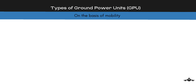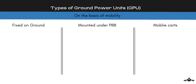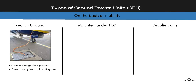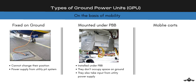Ground power units are categorized based on their mobility. They can be either fixed on ground, mounted under the boarding bridge, or mobile on carts. GPUs fixed on ground are installed on an aircraft stand and cannot change their position. Their cable has enough length to be pulled and attached to the aircraft. They take power supply from the utility power — that is, from the airport building — which we will discuss in upcoming lectures.